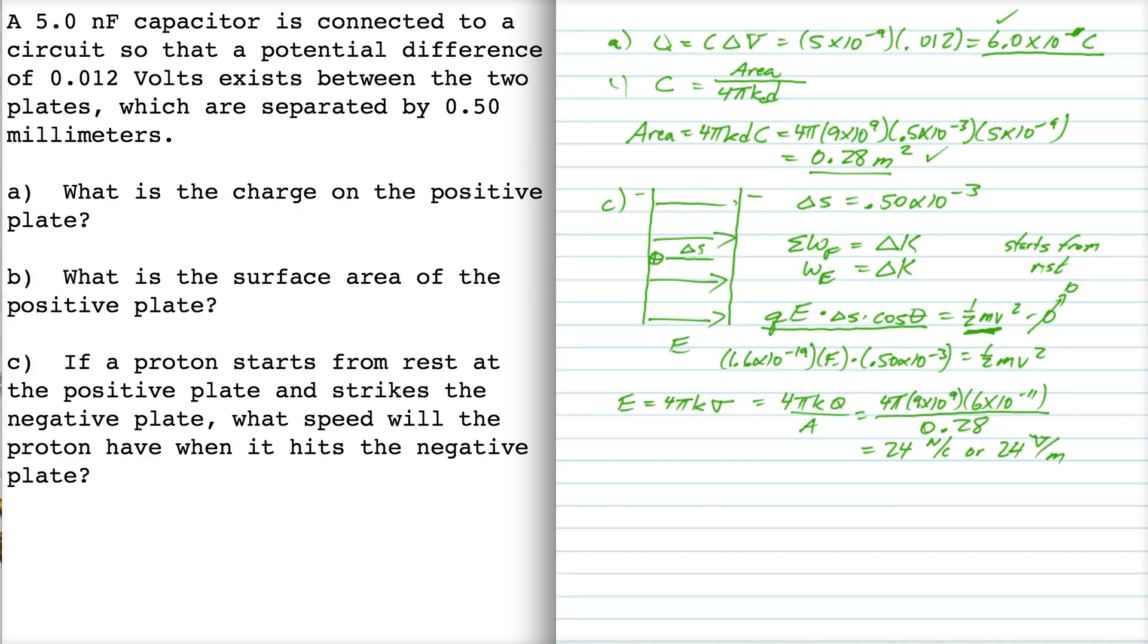Okay. Another way that we can do the electric field here, since it's uniform, recall that the electric field is equal to the potential difference divided by the distance, right? And the potential difference is 0.012. And the distance is 0.5 times 10 to the minus 3. And that's also 24 volts per meter.